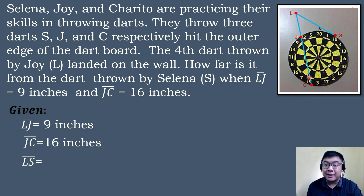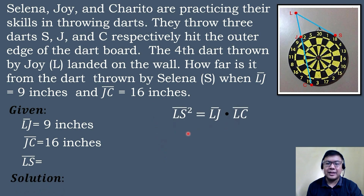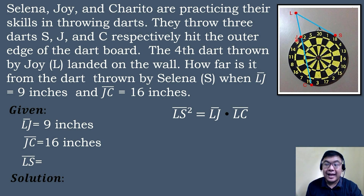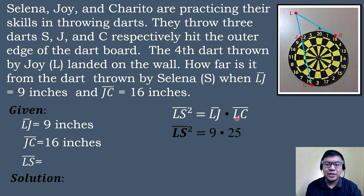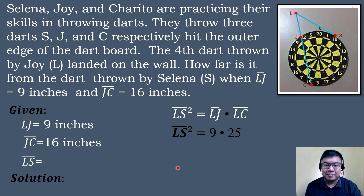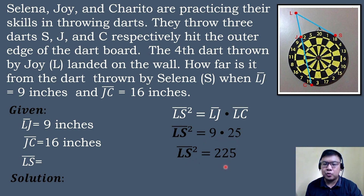To find the measure of segment LS, we will apply the intersecting secant and tangent theorem, because we have a secant segment and a tangent segment. Our formula will be: the square of the tangent segment LS equals the product of the exterior part of the secant segment, which is segment LJ, times the whole secant segment, which is segment LC. Substituting the values: segment LS squared equals segment LJ, which is 9, times segment LC, which equals segment LJ plus segment JC. So 9 plus 16 equals 25, which is the measure of segment LC.